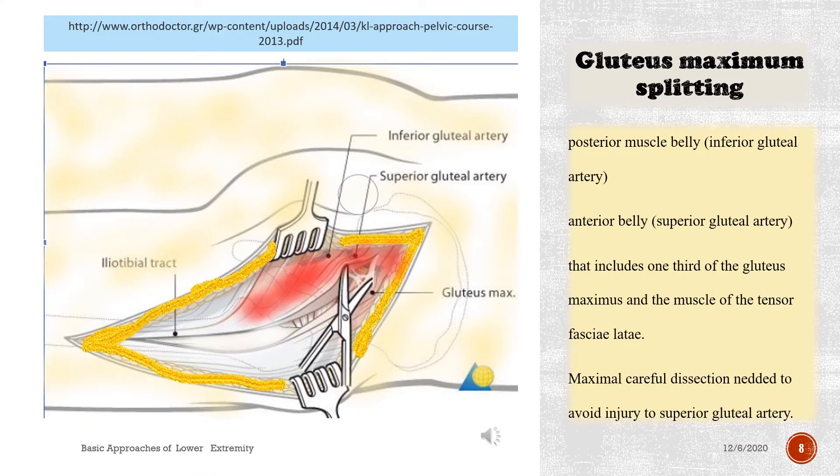Gluteus maximus splitting: posterior muscle belly and anterior belly that includes one-third of the gluteus maximus and the muscle of the tensor fasciae latae. Maximal careful dissection to avoid injury to the superior gluteal artery.